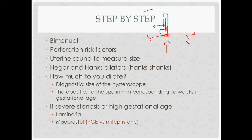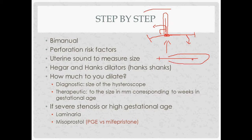Perforation risk factors have to do with a thinned-out or weakened myometrium, or cervical stenosis. A thinned-out uterus could be because it's distended — for example, if someone is pregnant — or post-menopausal. Cervical stenosis is a risk factor because you have to use a lot of pressure to gain access to the uterus. After the bimanual, you can use a uterine sound — a small metal device — to measure the depth of the uterus. Don't use it in a pregnant or recently pregnant uterus, as the perforation risk is too great.